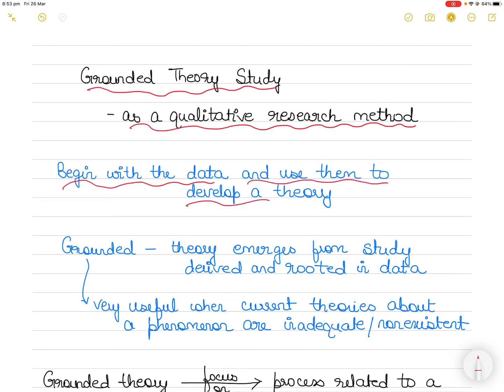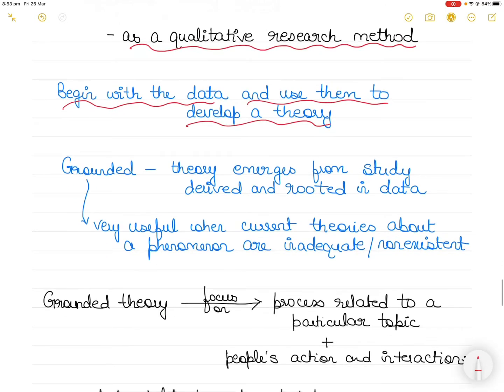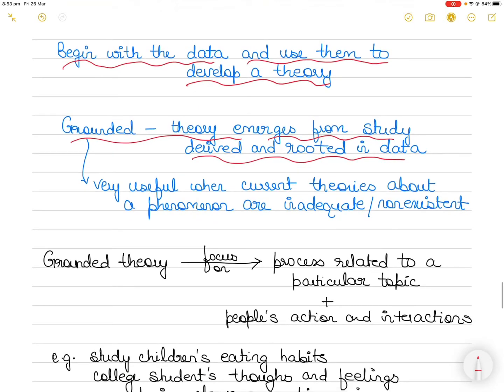The term grounded itself refers to the idea that the theory will emerge from the study itself and it is derived from and rooted in the data that has been collected in the field rather than from the research literature.